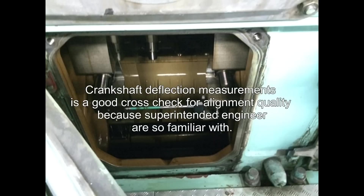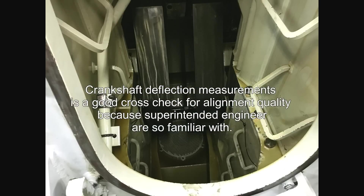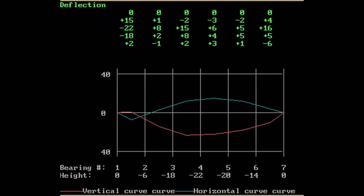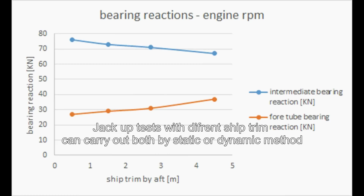Crankshaft deflection measurements at different draft and trim stages serve as a good cross-check test for alignment quality, as superintendents and engineers are familiar with this method. By static jackup test, the bearing reactions can be measured under different ship draft conditions, and it can be concluded that the tube bearing reactions are most sensitive.